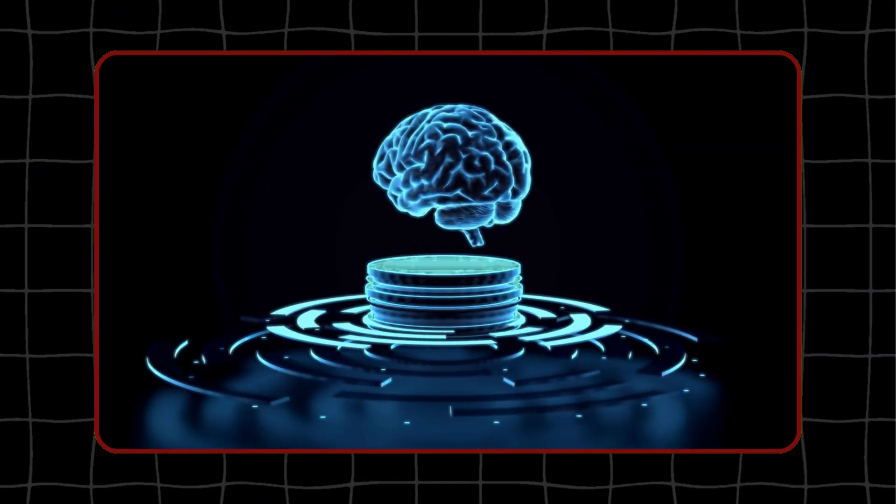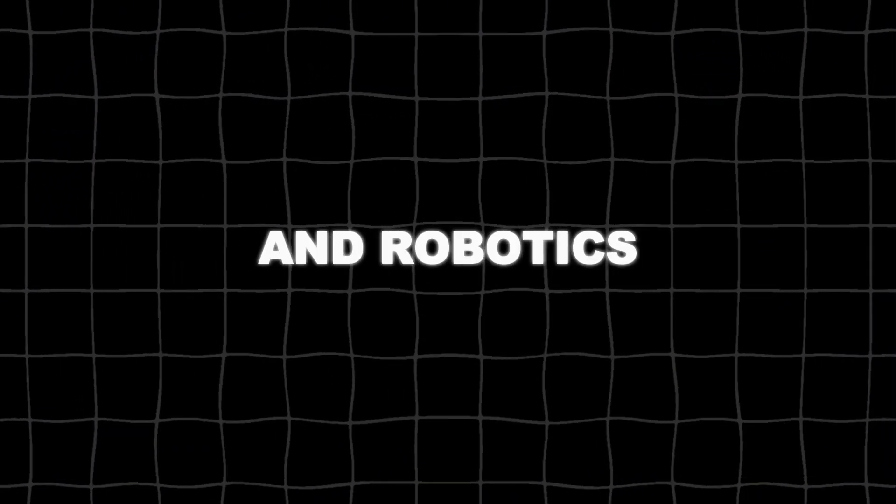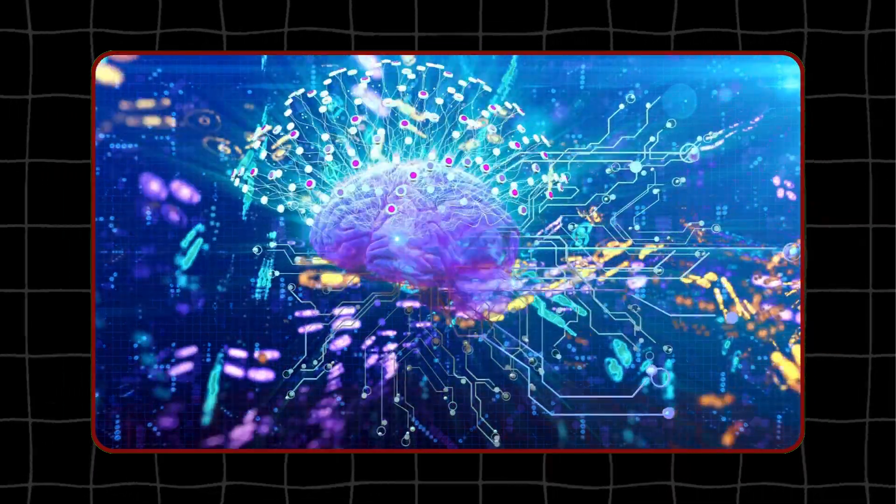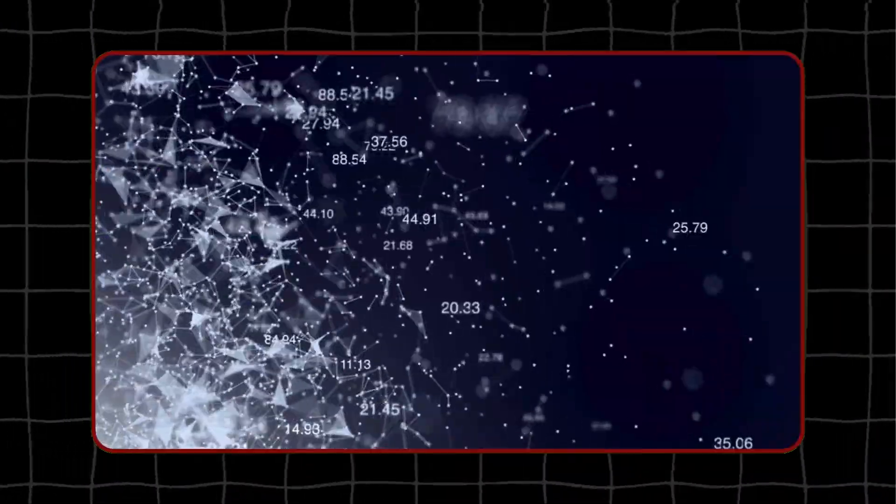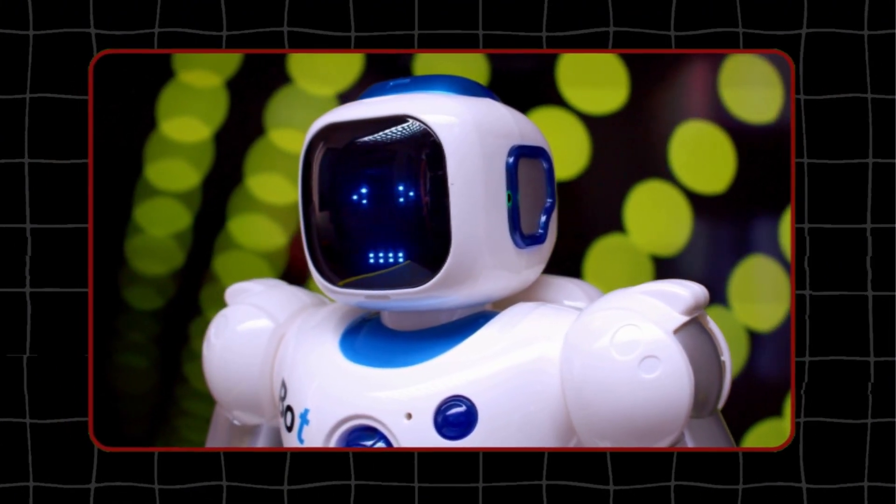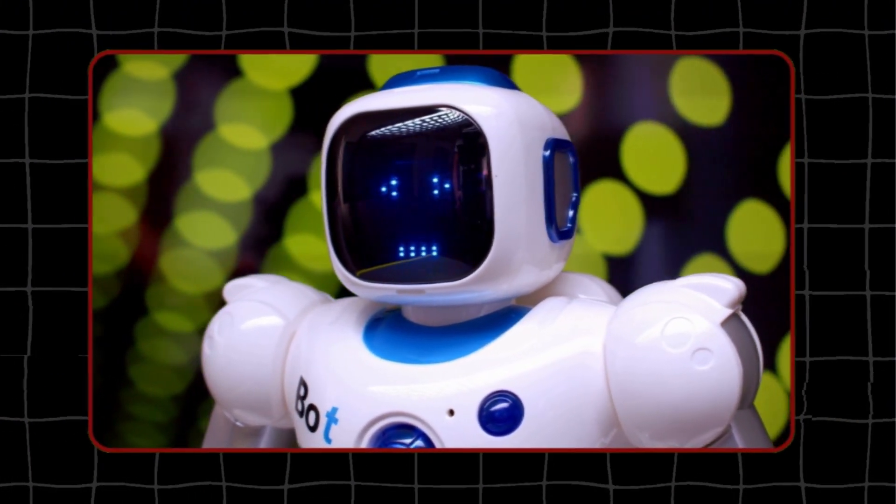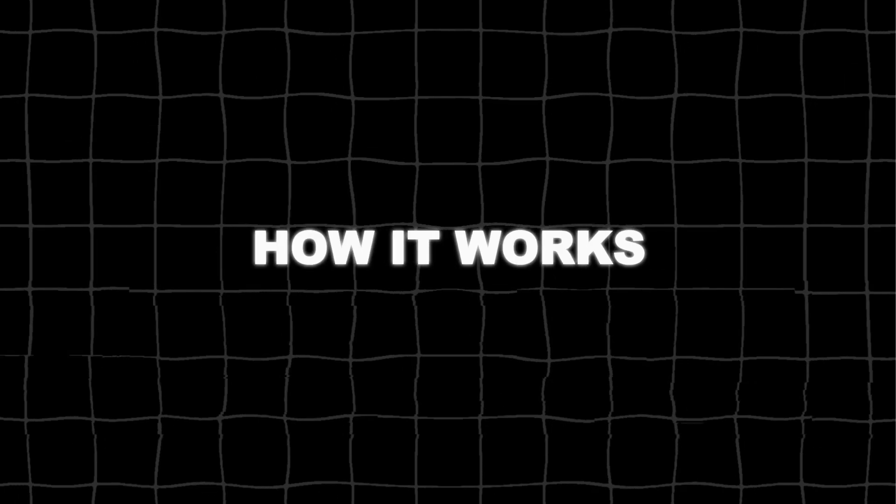This research has huge implications for both neuroscience and robotics. It can help us understand how the human brain works and how it differs from other brains. It can also help us create more advanced and adaptive robots that can learn from their experiences and adapt to new situations. Here's how it works.